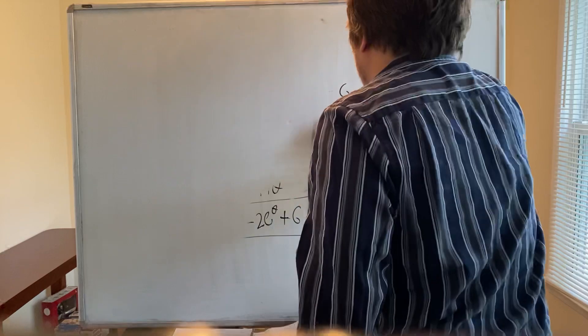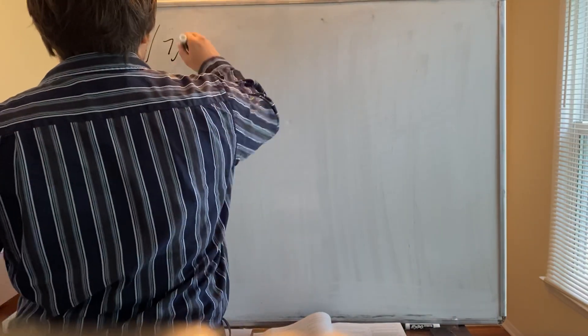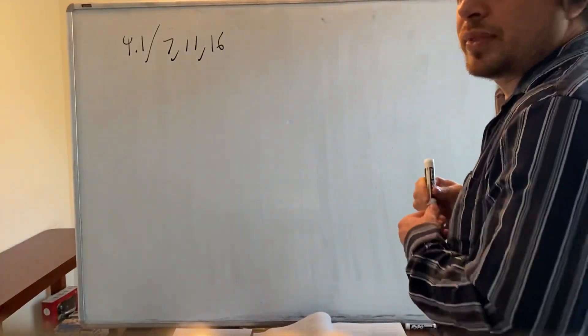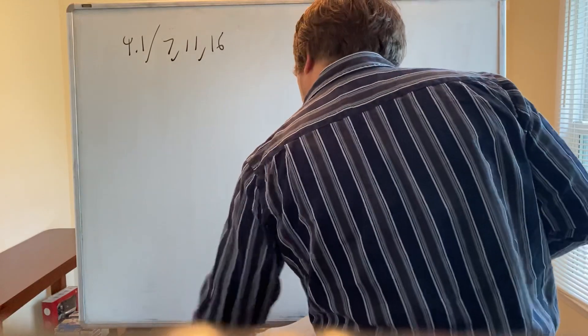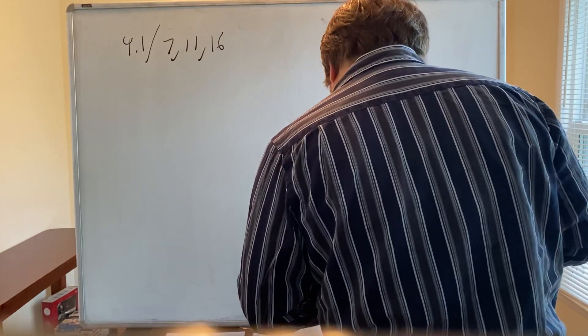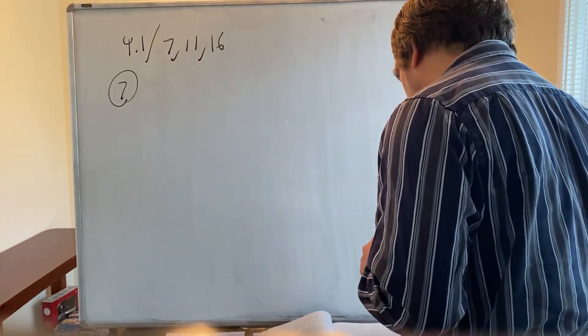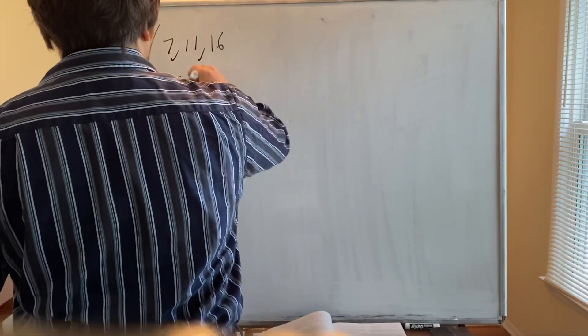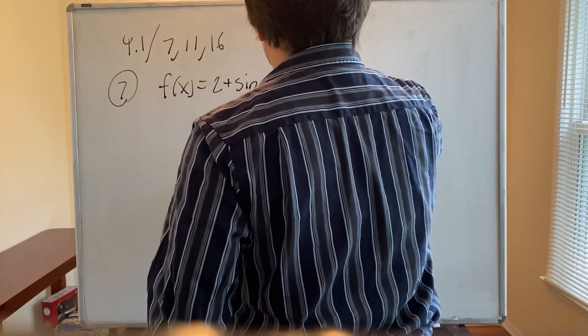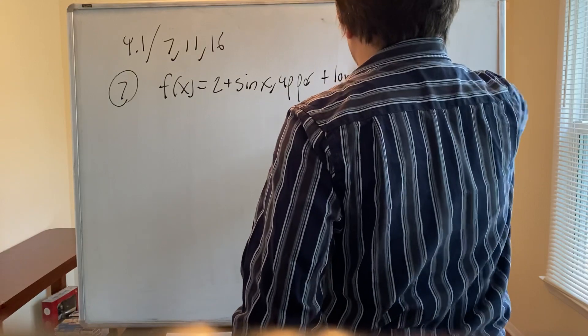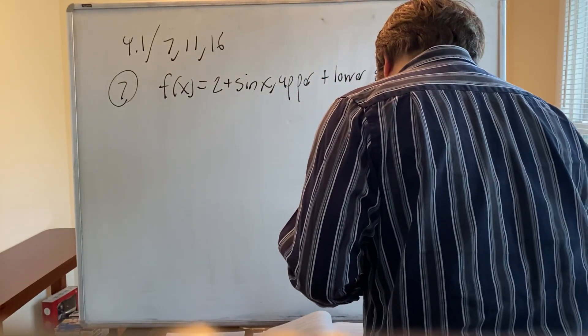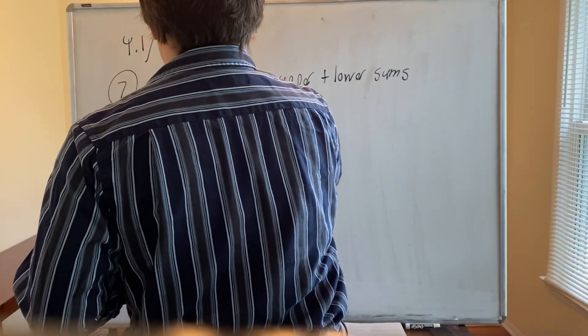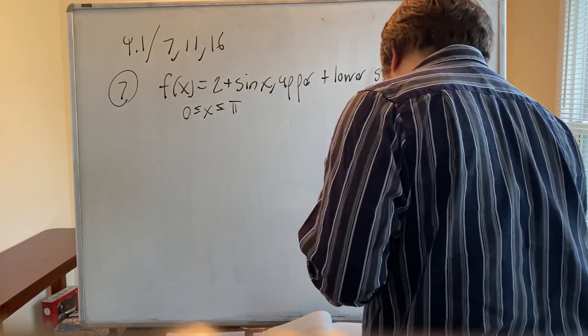Next, let's go to section 4.1. The problems are 7, 11, and 16. For number 7 in 4.1, it says evaluate the upper and lower sums for f(x) = 2 + sin x over the interval 0 ≤ x ≤ π with n = 2, 4, and 8.